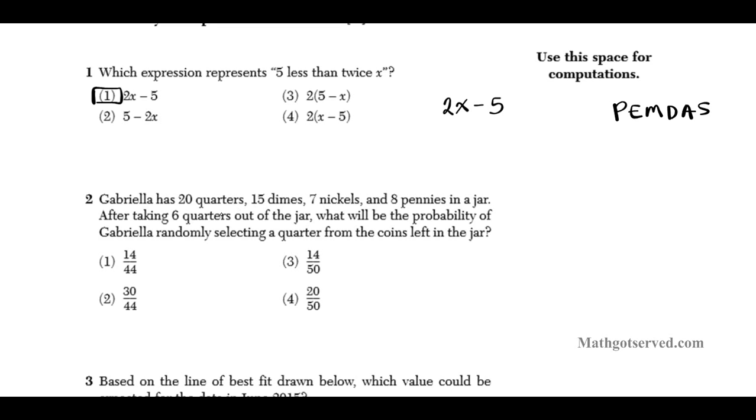Let's move on to question 2. Question 2 is Gabriella has 20 quarters, 15 dimes, 7 nickels and 8 pennies in a jar. After taking 6 quarters out of the jar, what will be the probability of randomly selecting a quarter from the coins left in the jar? So remember, probability of an event occurring is basically desired outcomes. We can say number of desired outcomes over the total.